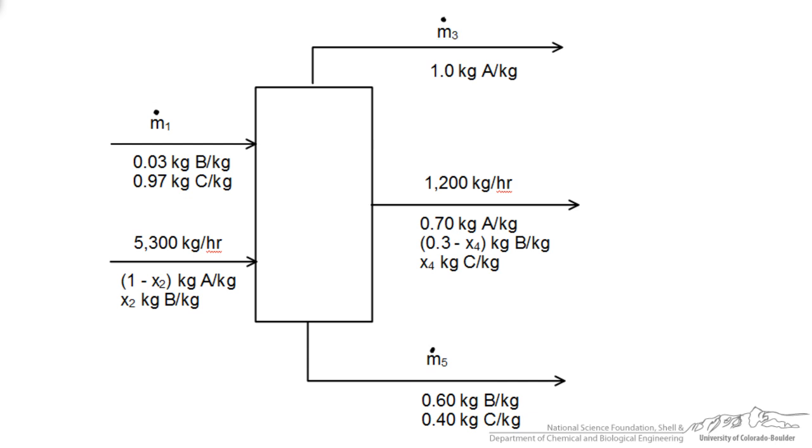We also have unknown compositions. Whereas here we are told that 3 weight percent of the stream is component B. We don't know the weight percent here and we have designated it as x2 so the remaining must be 1 minus x2 since we are talking about a mass fraction. We also don't know the composition in stream 4 for C, but we are given the composition for A.